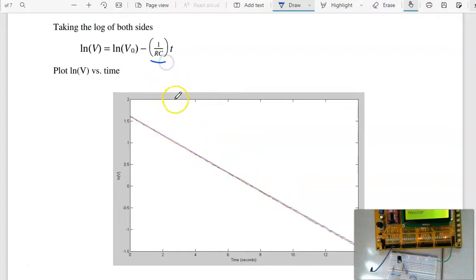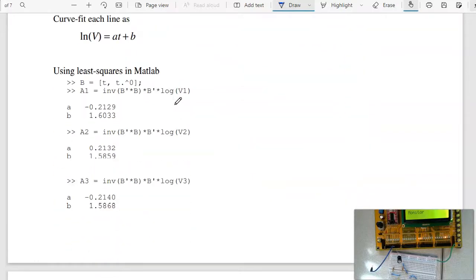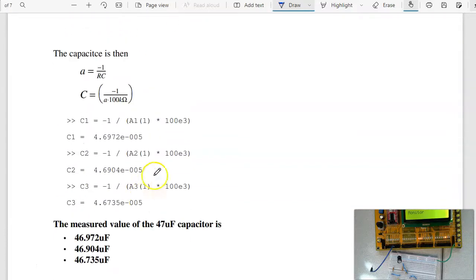The slope is 1 over RC. To find the slope, I can use least squares, set my basis as time and 1. Now do a least squares curve fit. Least squares curve fit is inverse of B transpose B, B transpose log of voltage times Y. This is Y right here. And I get two numbers. This is 1 over RC. For the second run, third run, I did three runs. I should get three numbers. I can now calculate what the capacitance is. I know the capacitor is 100 kiloohms. So the capacitor is 1 over my constant times 100k. I get 46.9 microfarads, 46.90, 46.73.